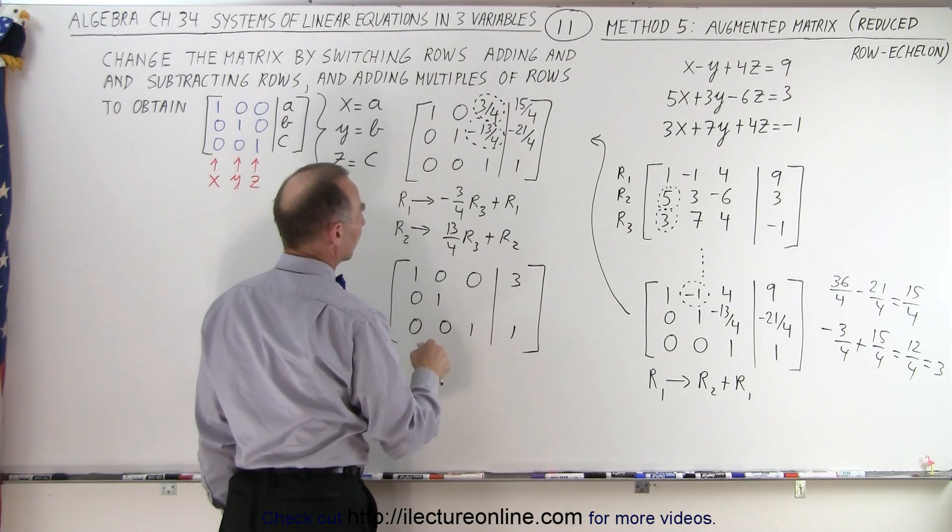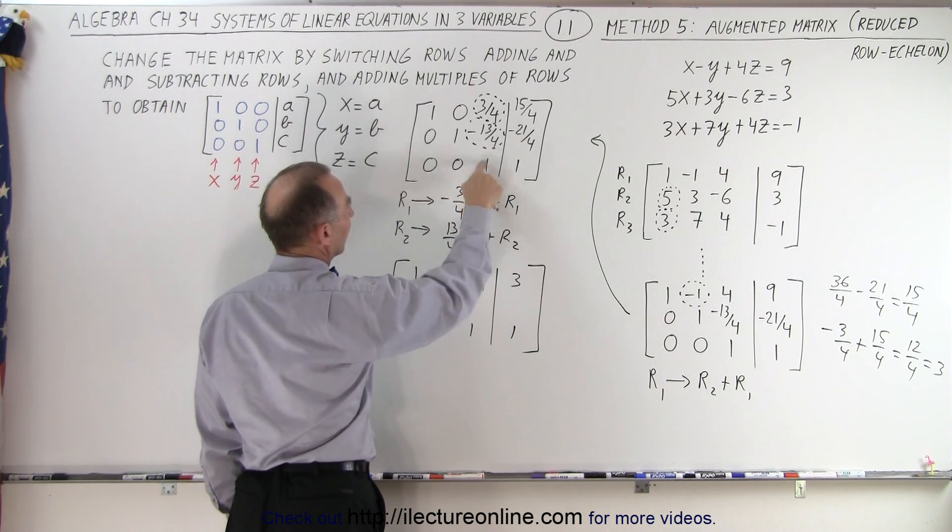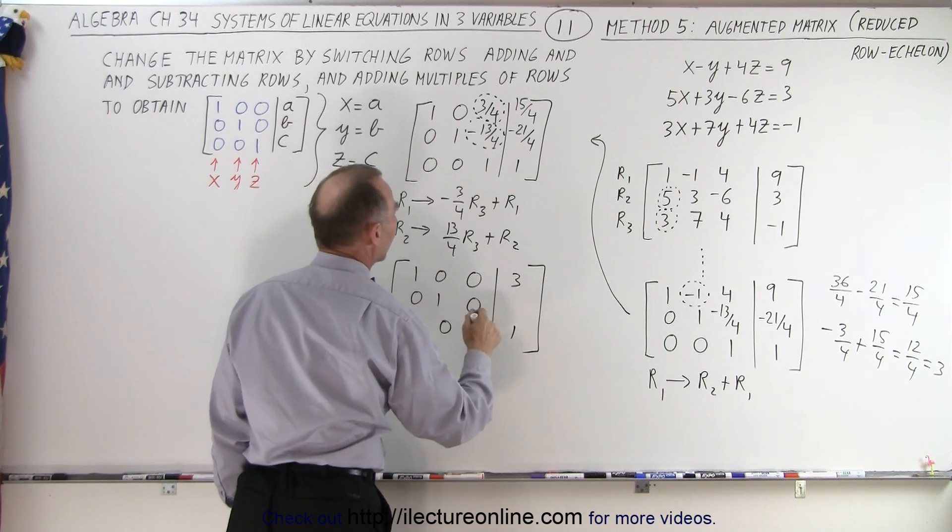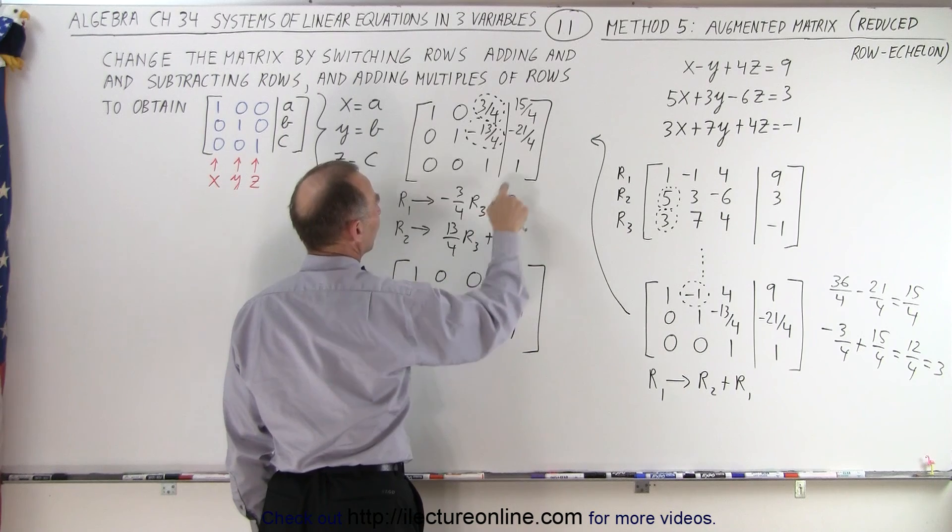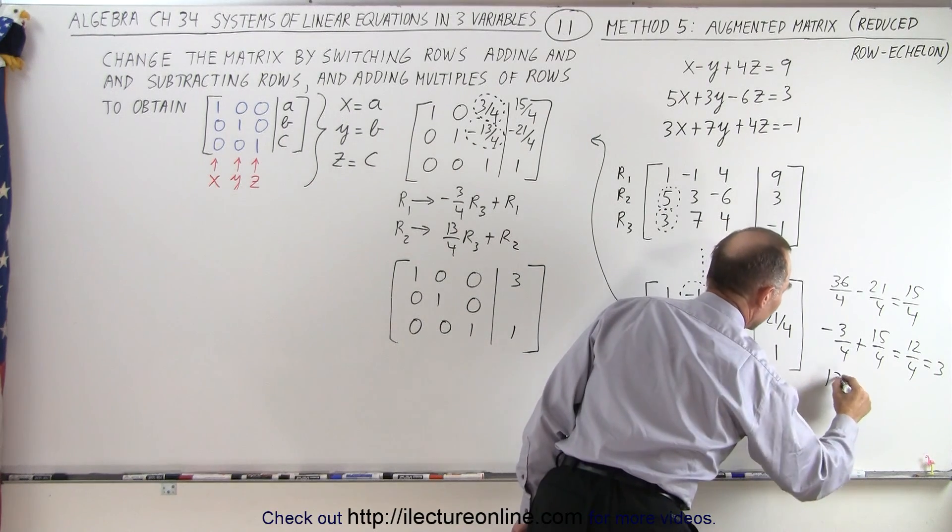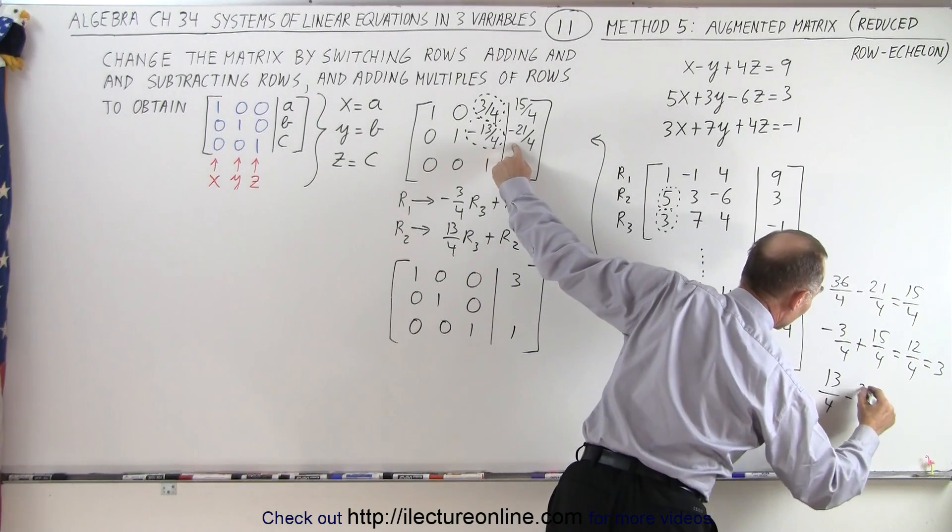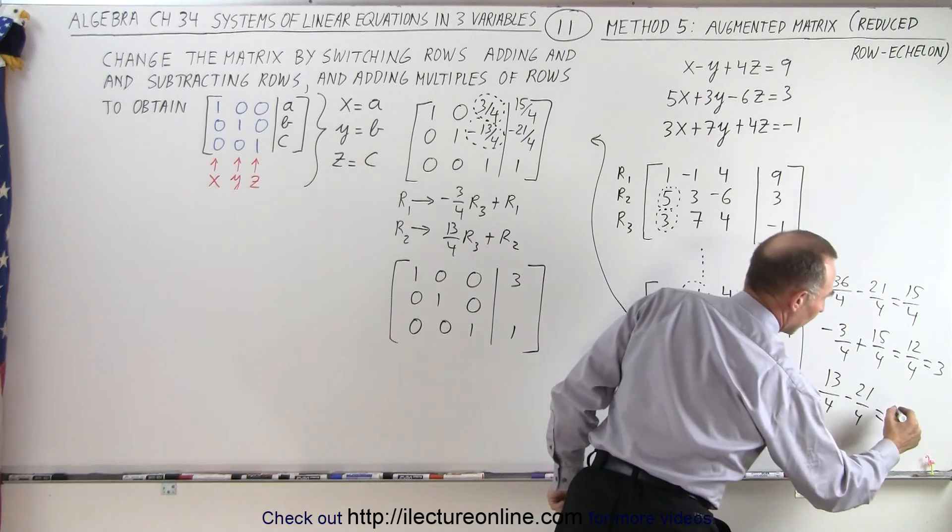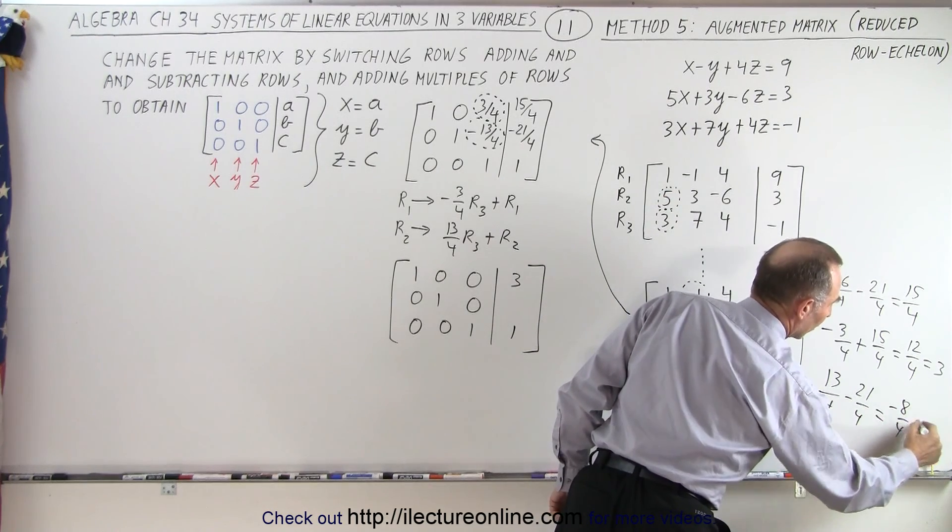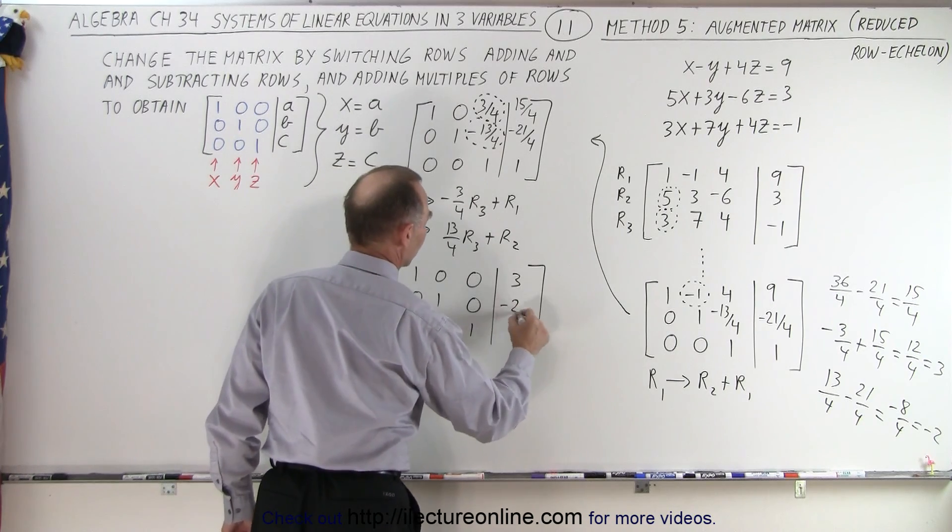Now for the second row, I take the positive 13 over four times row three and add it to this, I get zero. And a positive 13 over four times this and add it to that. So I end up with 13 over four times one. And I'm going to add that to negative 21 over four, which is equal to minus eight over four, which is equal to minus two. That means that this becomes a minus two.